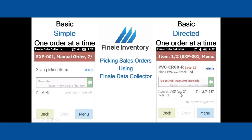There's a lot more information when you use BASIC DIRECTED. It allows you to pick one order at a time, and when you're done picking that one order, it will be considered packed or shipped based on your settings. That covers BASIC.